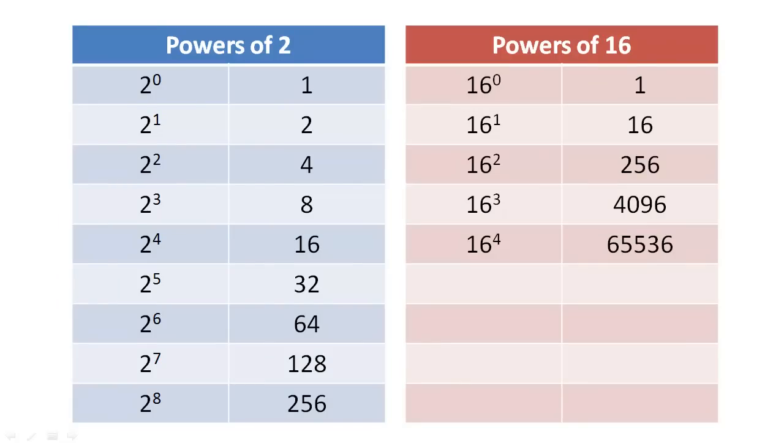People often prefer to use hexadecimal notation when working with computers because numbers represented by hexadecimal notation are easier for us to read than those in binary notation. Hexadecimal is convenient because 16 is a power of 2. As you may notice on this chart, every fourth power of 2 is a power of 16.